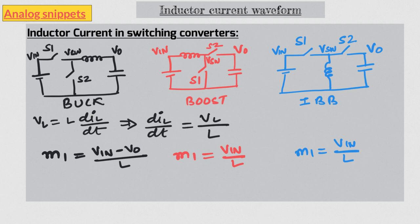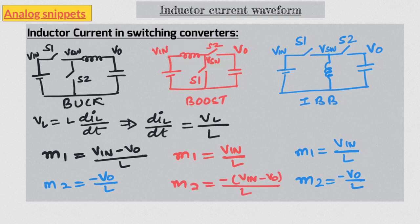Now let's look at the falling slope. For buck and IBB, the voltage across the inductor during the falling slope is V-out, so the falling slope is −V-out/L. For boost, the voltage across the inductor during off-time is V-in minus V-out. We also notice that for buck and boost the inductor is directly connected between input and output for part of the duration — T-on in buck and T-off in boost — so there is a direct transfer of energy between battery and output. For IBB, this direct transfer of energy never happens.